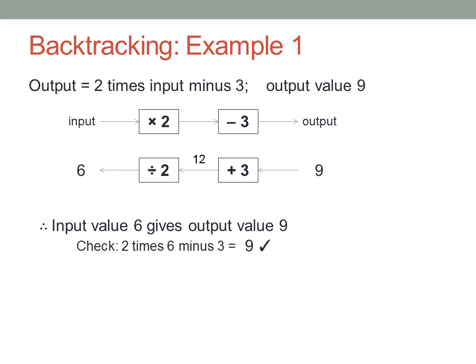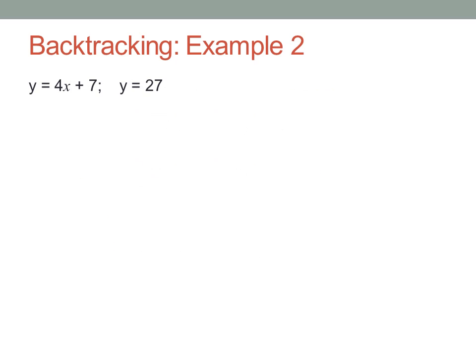The next example is written with algebraic variables instead of input and output, to show you that you can use exactly the same process to solve equations written like this. y equals four x plus seven and y, the output variable, equals twenty-seven. So we need to work out what value of x gives us a value of twenty-seven for y. We're solving this equation for x.